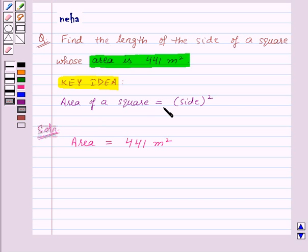Now, by the key idea, we have that area is side square. Let us replace area by side square. So, side square is equal to 441 meter square.